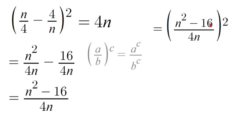So we're going to apply the exponent to both the numerator and the denominator in this equation. So (n² - 16)²/(4n)².